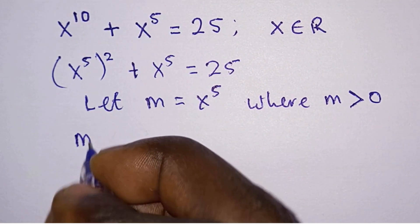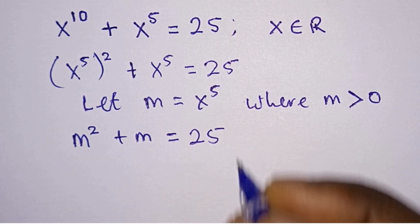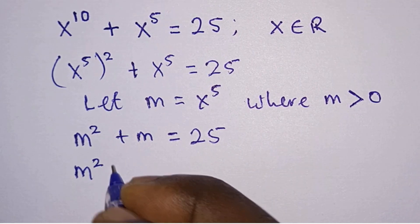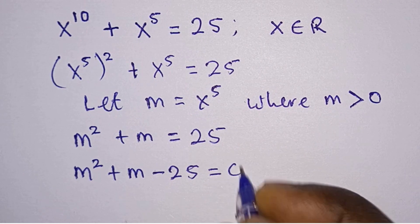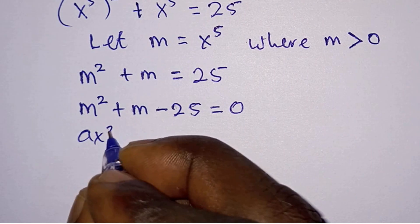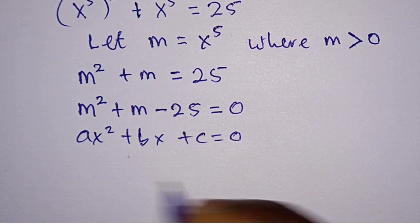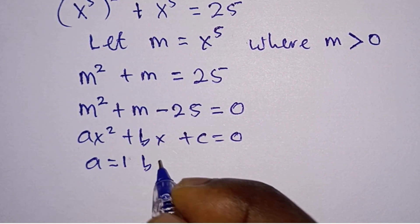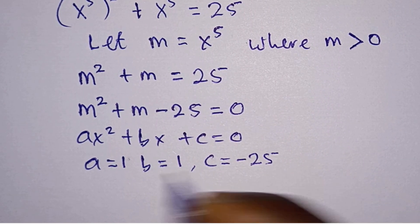So the equation now becomes m squared plus m is equal to 25. Since we have a quadratic equation, we will equate everything to 0 by subtracting 25 from each side. This is just like ax squared plus bx plus c equals 0, where a equals 1, b equals 1, and c equals negative 25.